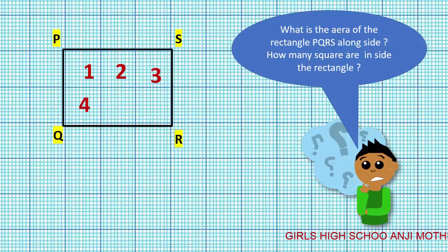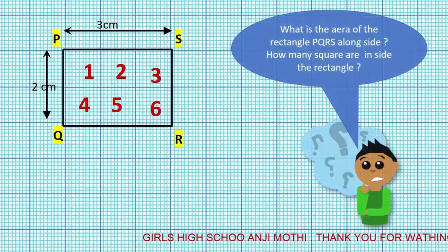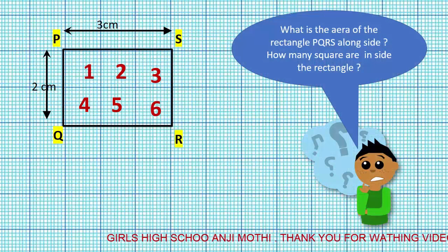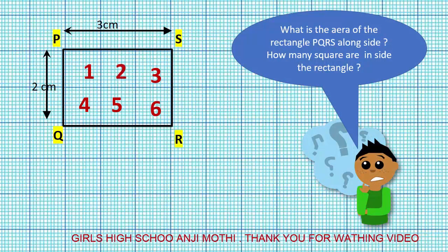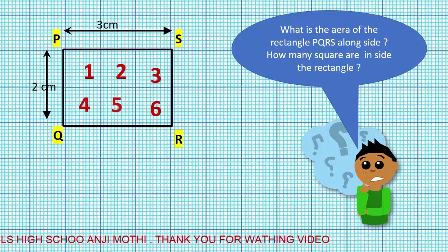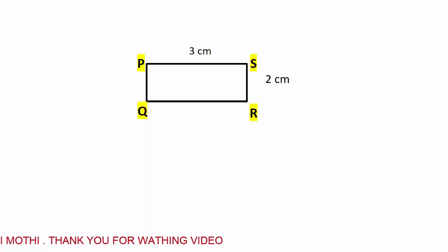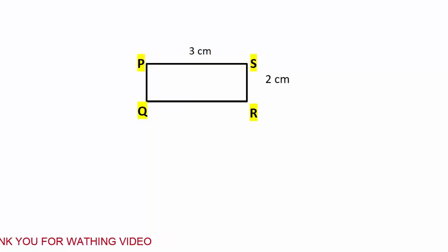How many squares are inside the rectangle PQRS? Let us count: one, two, three, four, five, six. There are six squares inside the rectangle PQRS, which has a length of three centimeters and a breadth of two centimeters.